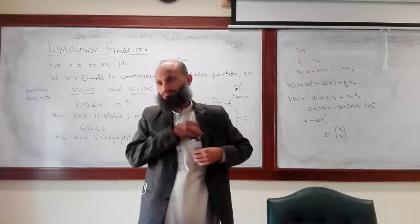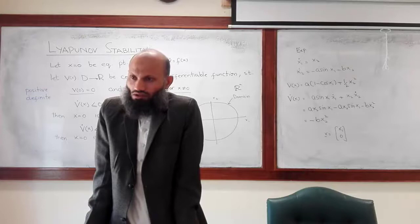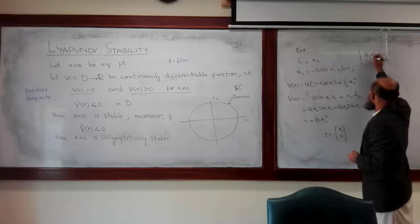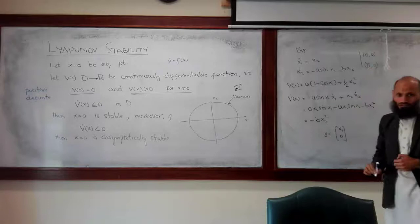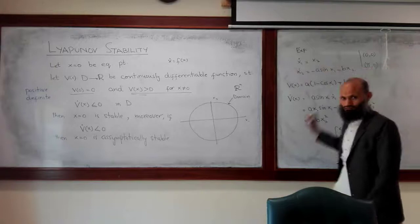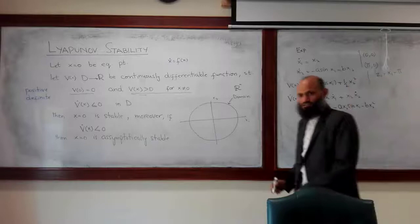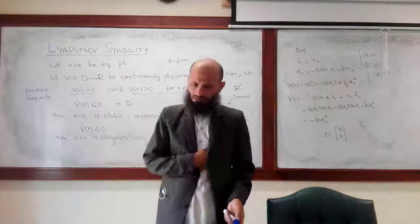Any questions? When the equilibrium point is other than zero — say at (π, 0) — we know how we can transform it. For example, we can define a new state variable z1 = x1 − π. That will shift the equilibrium point to the origin, and then we apply all this theory. The main difficulty is how to find the candidate Lyapunov function; we shall study some design methods which will help us select one.